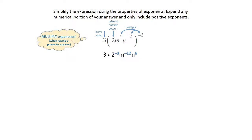Now look at the 4 terms that you wrote and identify the ones that are negative that will need to move. The 2 to the negative 3rd and m to the negative 12th are going to have to go to the denominator so that those exponents can become positive.